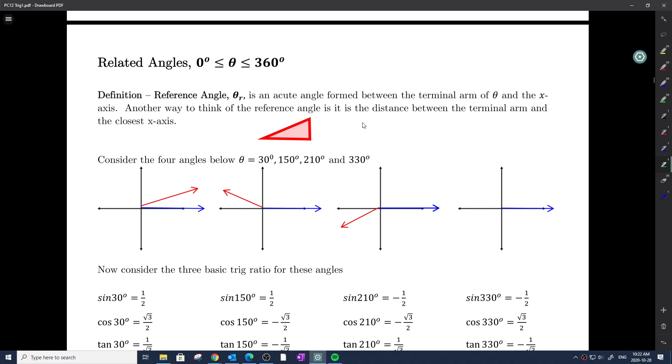Definition: Reference angle, we call this theta r. The reference angle theta r is an acute angle formed between the terminal arm of theta and the closest x-axis. Another way to think of a reference angle is the distance between the terminal arm and the closest x-axis.